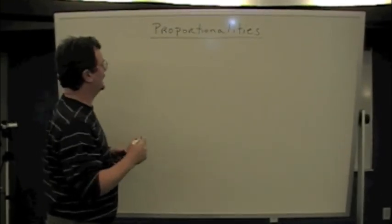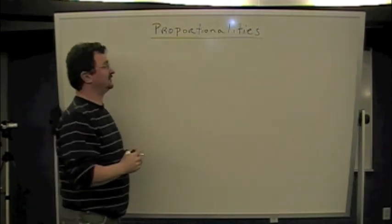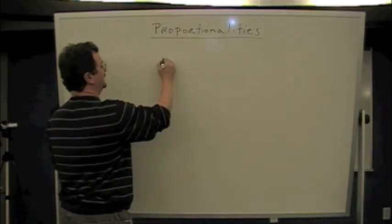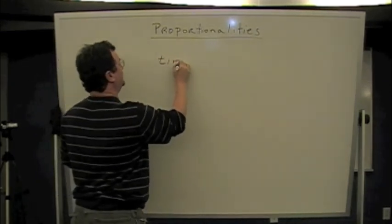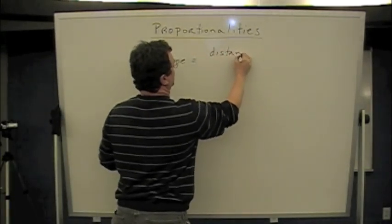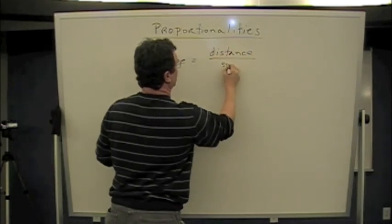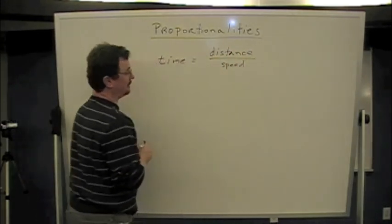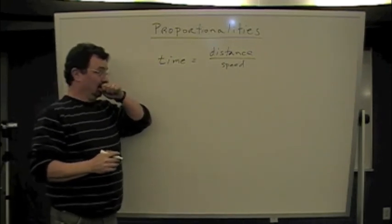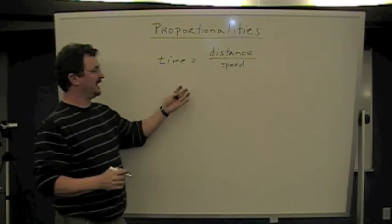Let me give an example. We had an equation in the last segment where time was equal to distance over speed, distance divided by speed. I'm going to write it out now. Time is equal to distance divided by speed. That's an equation.